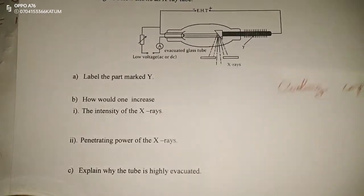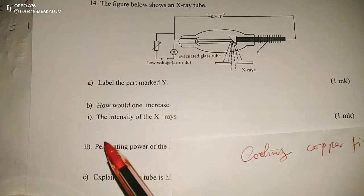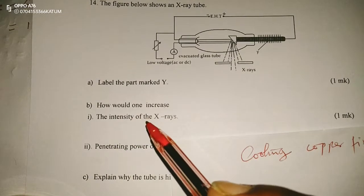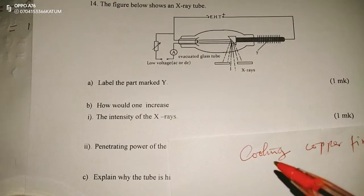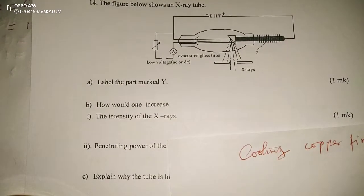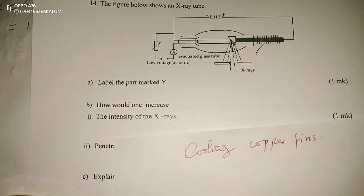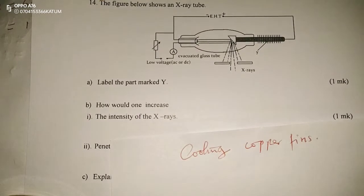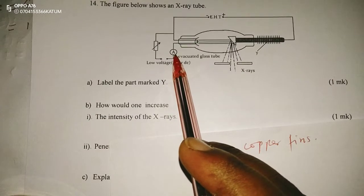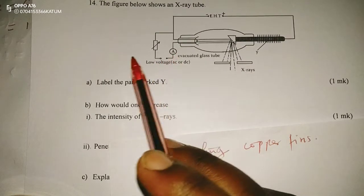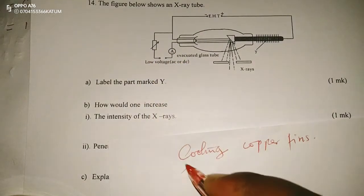How would one increase the intensity of the X-rays? The intensity of X-rays is the number of X-rays produced, and that is done by increasing the current. Remember we have a resistor and an ammeter here where current is being detected, so we can regulate the current by increasing it.